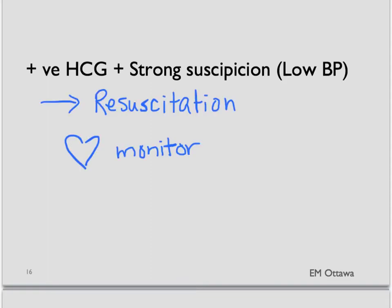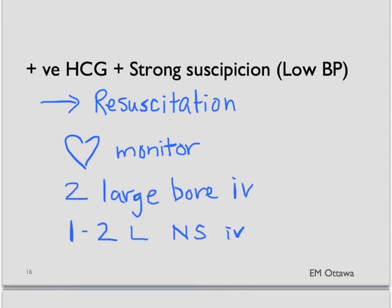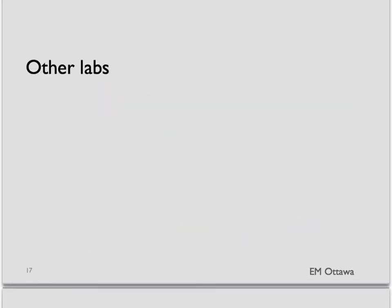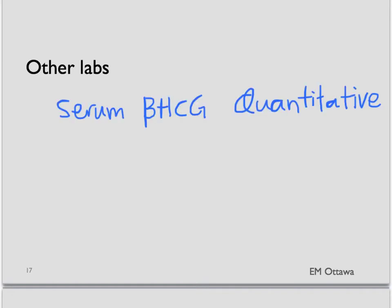We'll hook her up to the cardiac monitor and start two large-bore IVs. If she is hypotensive, 1 to 2 liters of saline would be given and we keep checking her vital signs. If vitals do not normalize, blood might be needed. Once we start to stabilize the hypotensive, unstable patient, we can start other blood work: a quantitative serum HCG test to give you the actual HCG level, a CBC to check for hemoglobin, and a type and screen to find the patient's blood type.